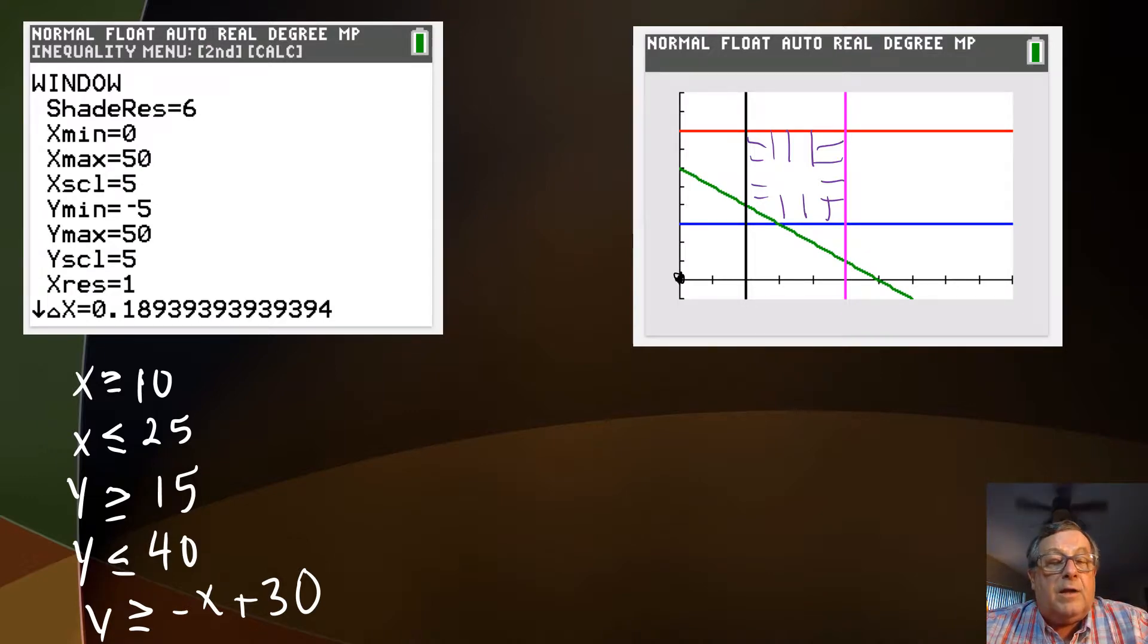And then finally, we got y is greater than or equal to negative x plus 30. If I put in 0, 0, 0 for y, 0 for x, then I come as 0 greater than or equal to 30. Well, the answer to that is no. So I'm going to shade away from the origin.